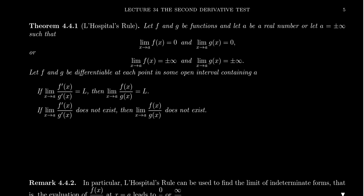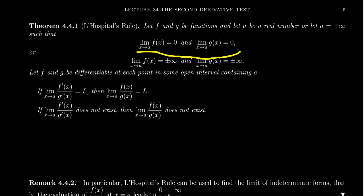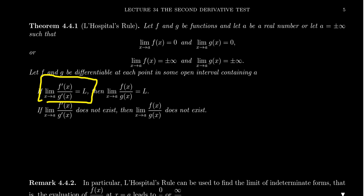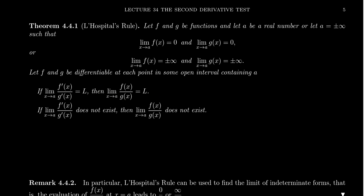L'Hôpital's rule says the following: let f and g be functions and let a be a real number or plus or minus infinity. If the limit as x approaches a of f(x) is 0 and the limit of g(x) is 0, or both limits are plus or minus infinity, and if f and g are differentiable, then the limit as x approaches a of f′(x) over g′(x) equals L if and only if the limit of f(x) over g(x) equals L. And if the limit of the ratio of derivatives doesn't exist, then the original limit doesn't exist either.